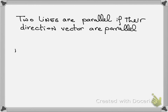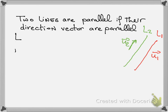Two lines are parallel if their direction vectors are parallel. So L1 is parallel to L2 if and only if u1 is parallel to u2 — meaning if the direction vectors are parallel, then the lines are actually parallel.